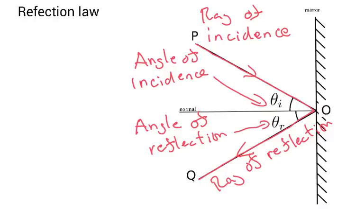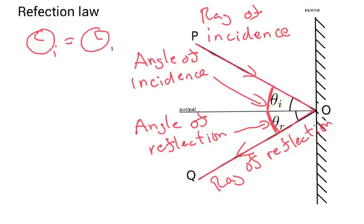The angle of incidence is the angle that the ray of light makes with the normal line. The reflection law states that the angle of incidence is equal to the angle of reflection.